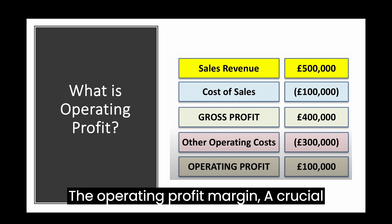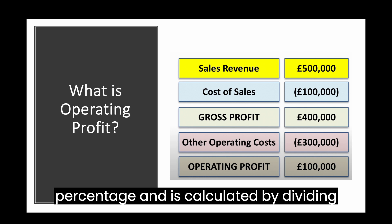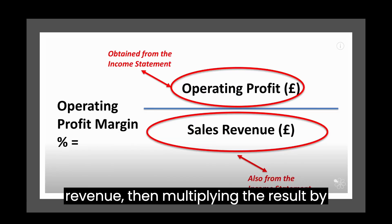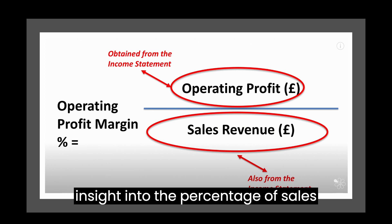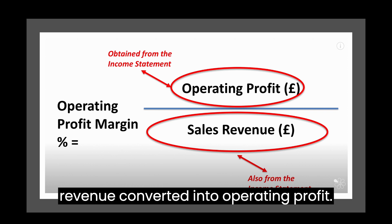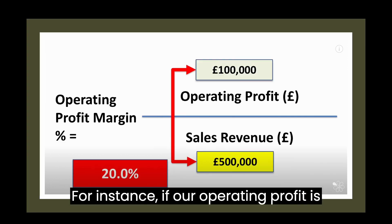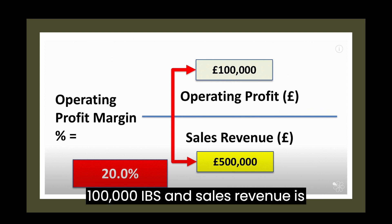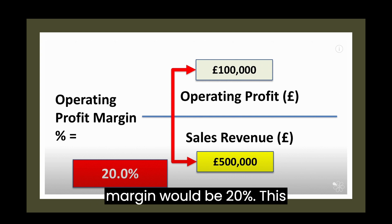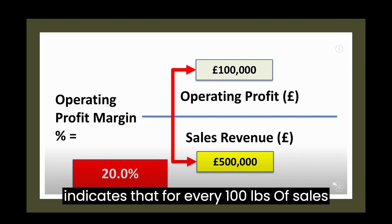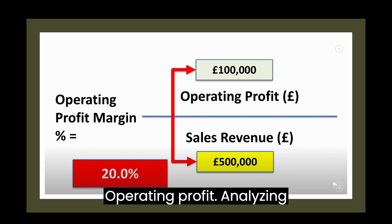The operating profit margin, a crucial profitability ratio, is expressed as a percentage and is calculated by dividing the operating profit by the sales revenue, then multiplying the result by 100. This ratio provides insight into the percentage of sales revenue converted into operating profit. For instance, if operating profit is £100,000 and sales revenue is £500,000, the operating profit margin would be 20%, indicating that for every £100 of sales revenue, the business earns £20 of operating profit.